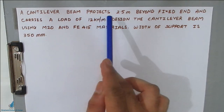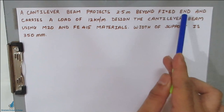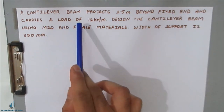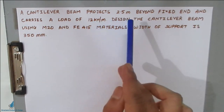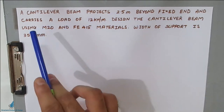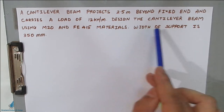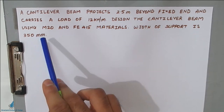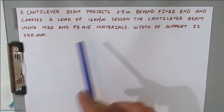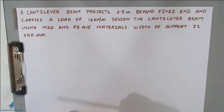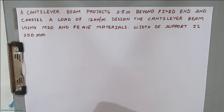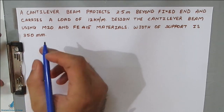So let's start with today's problem: a cantilever beam projects 2.5 meters beyond the fixed end and carries a load of 12 kilonewtons per meter. Design the cantilever beam using M20 and Fe415 materials; width of support is 350 mm. As usual in an RCC problem, many things will not be given — you have to assume them and make use of IS 456:2000 code book. The first step will be writing the given data.